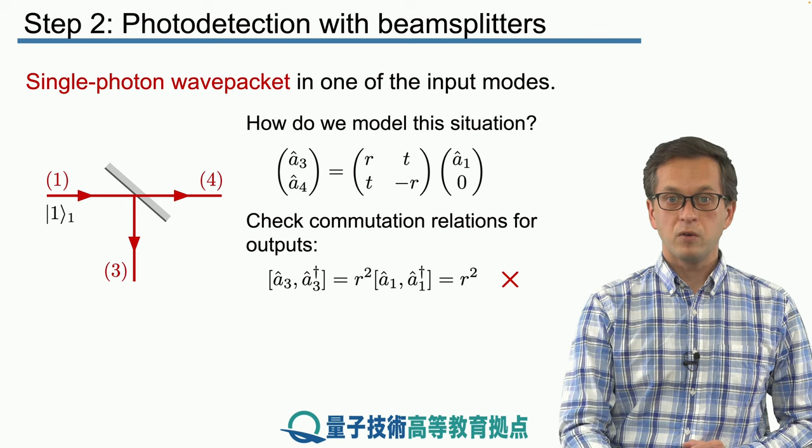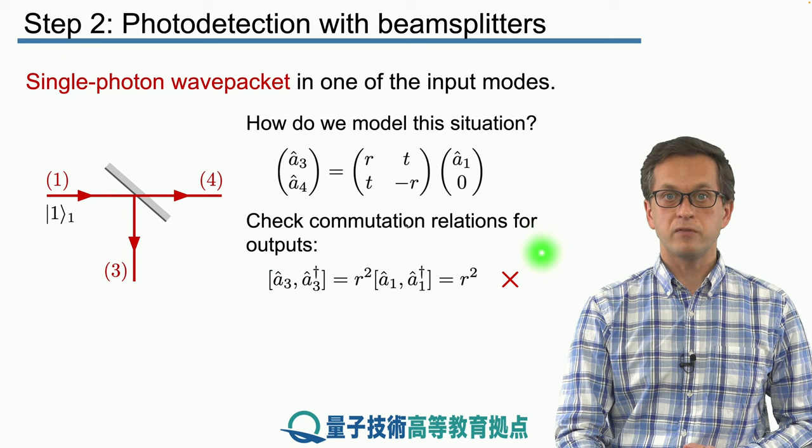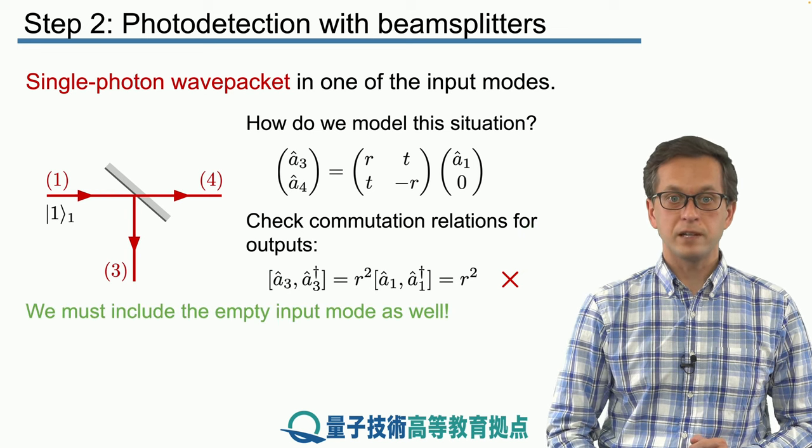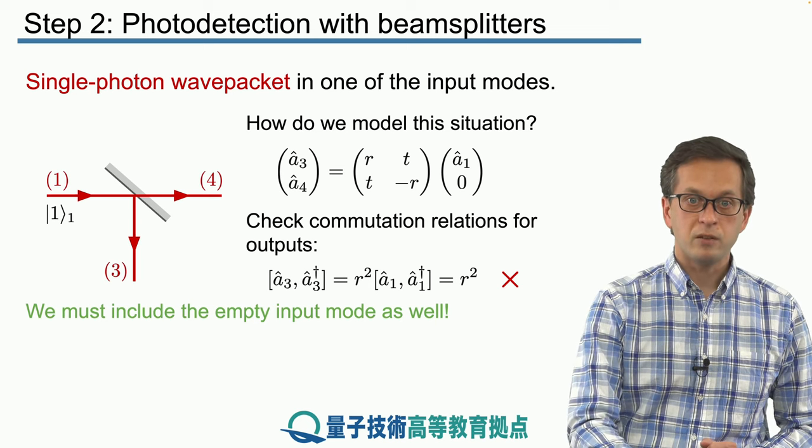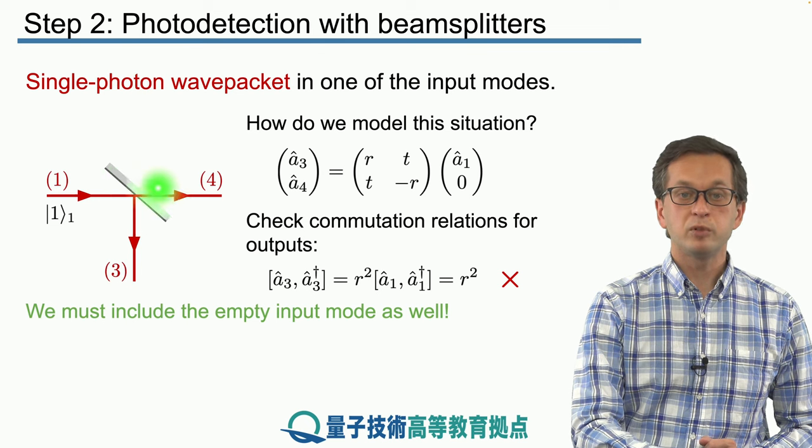Why? Because this commutator has to be equal to 1, otherwise it's not a physical beam splitter. So where did we go wrong? Let's retrace our steps. The main thing is that we completely omitted the input mode 2.